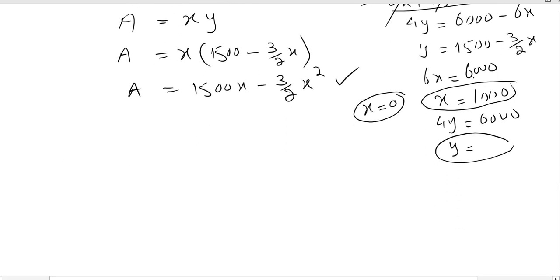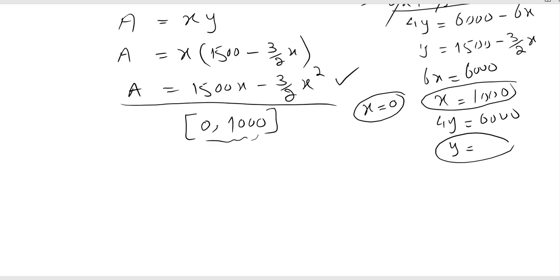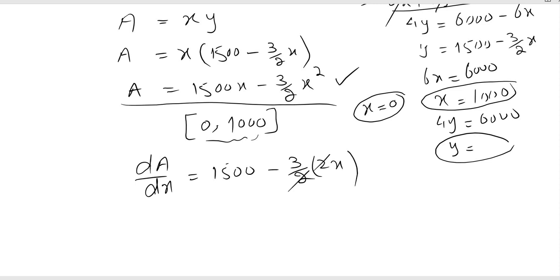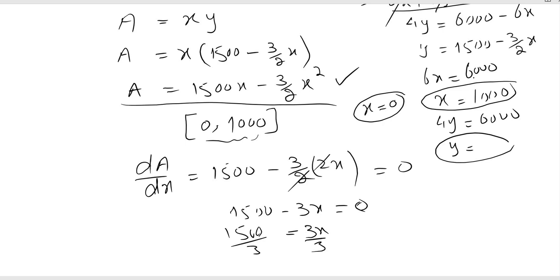We need to find the critical point within this interval. We take the derivative of the area function and set it equal to zero. The derivative gives 1500 minus 3x equals 0. Moving 3x to the other side and dividing both sides by 3, we get x equals 500.